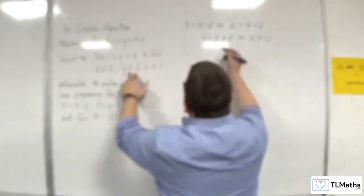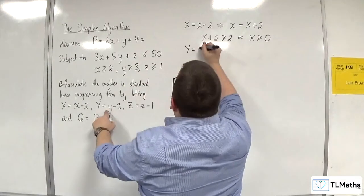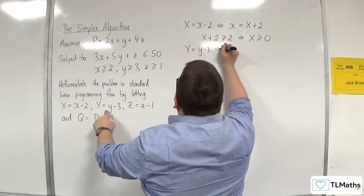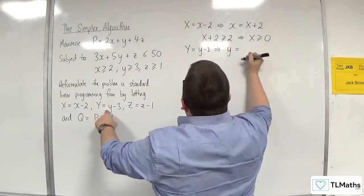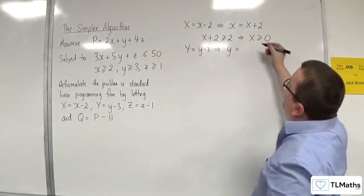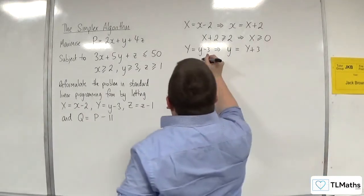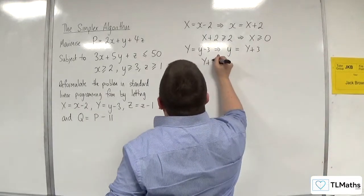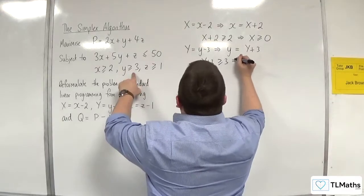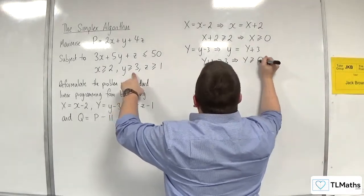For capital Y equals y take away 3, lowercase y will be capital Y plus 3. So Y plus 3 ≥ 3, and therefore capital Y ≥ 0.